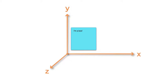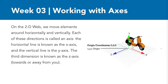In CSS we can use 3D transforms. Before we get started, you need to understand about axes. On the 2D web we move elements around horizontally and vertically — each of these directions is called an axis. The horizontal line is known as the x-axis and the vertical line is known as the y-axis. In the illustration, these are angled so that we can see perspective, which allows us to see our z-axis. Here you can clearly see: x is the horizontal, y is the vertical, and z is the depth.